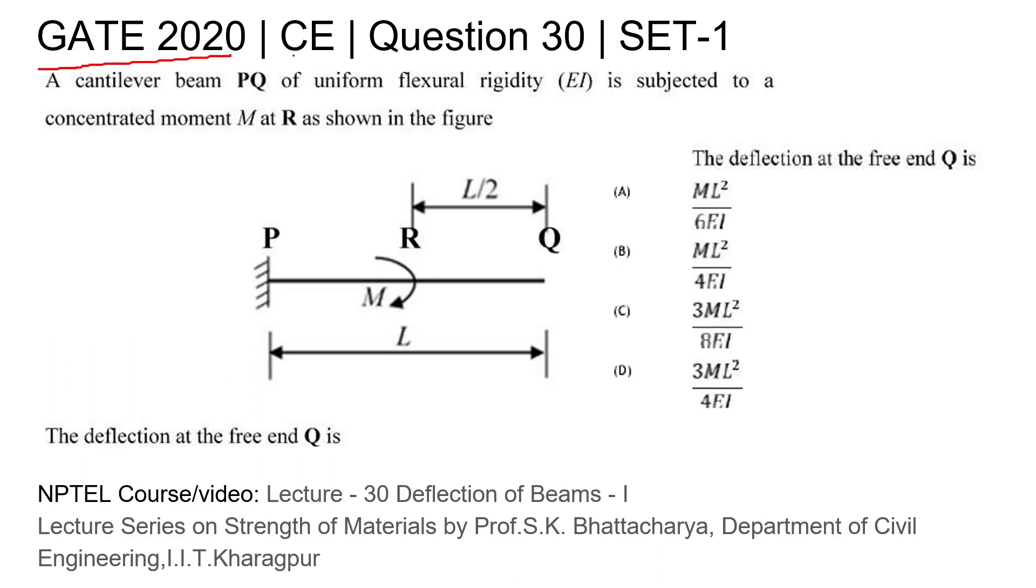GATE 2020 civil engineering question number 30 set 1. A cantilever beam PQ of uniform flexural rigidity is subjected to a concentrated moment M at R as shown in a figure. They have given a figure here and four options to choose one correct option. For this question you can refer to this NPTEL video lecture. Let's try to understand and then solve this question.